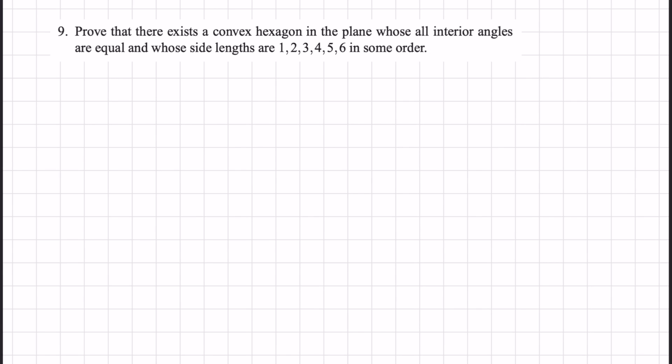The question says: prove that there exists a convex hexagon in the plane whose all interior angles are equal and whose side lengths are one, two, three, four, five, six in some order.